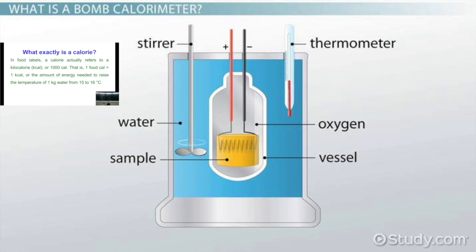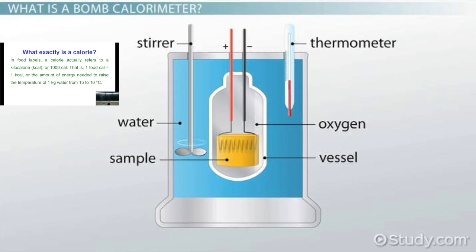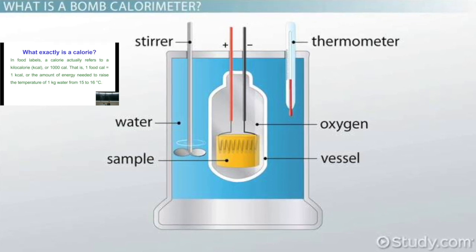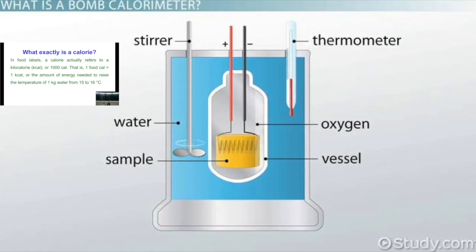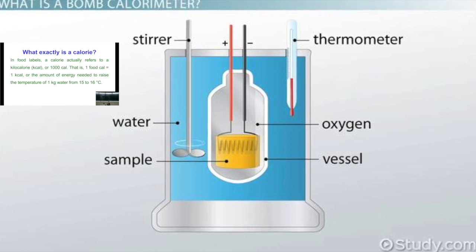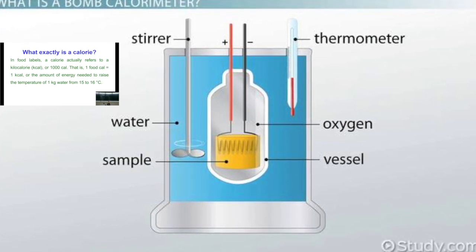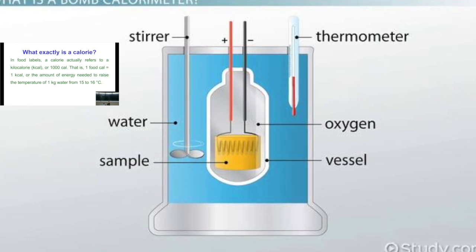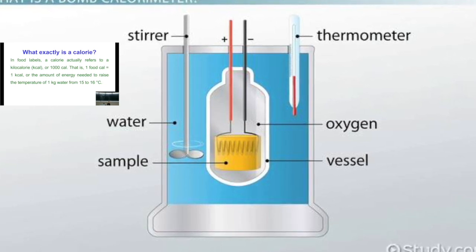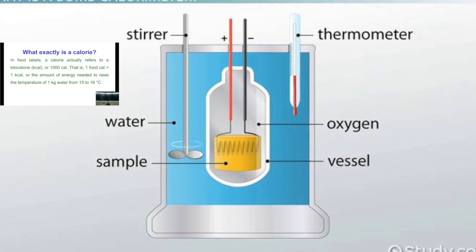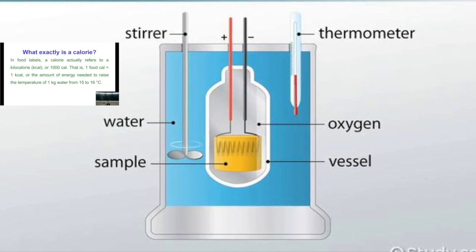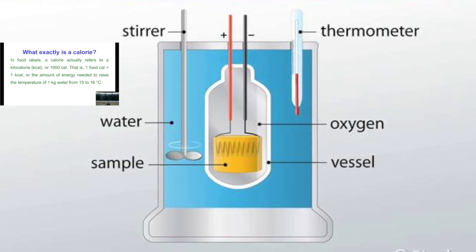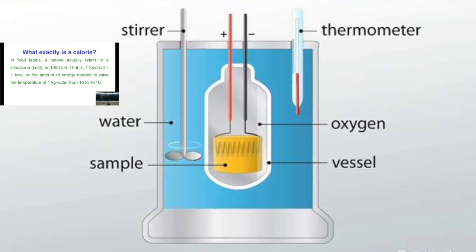A bomb calorimeter is a machine that you put a piece of food, whatever you want to burn, you put it in there. And the system is set up in a way that there is an amount of water that surrounds the chamber where you're going to burn that food. So what you do is set that piece of food on fire, essentially, and that will release heat. And the heat that comes out of that burning process will heat up the water that surrounds the chamber.